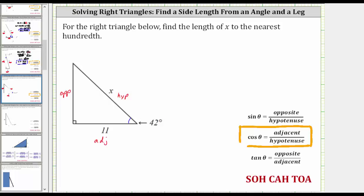So using the given right triangle, we know that cosine 42 degrees is equal to the ratio of the adjacent side to the hypotenuse, which gives us eleven divided by x.